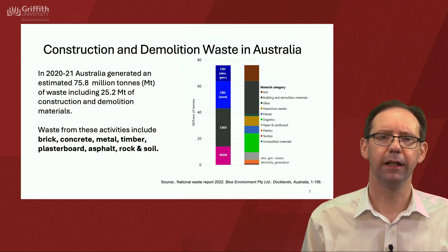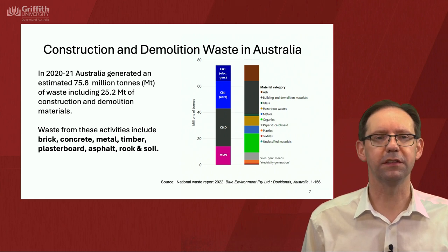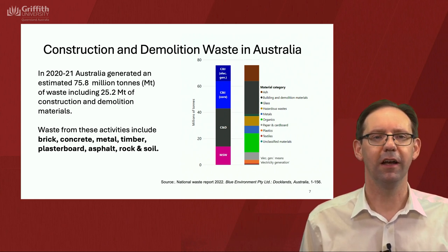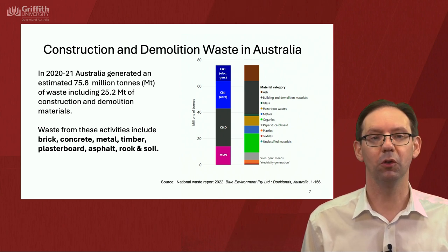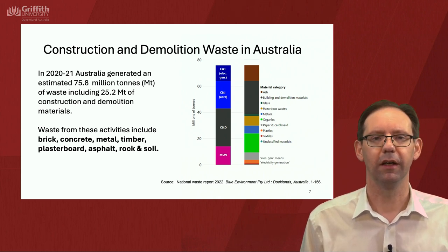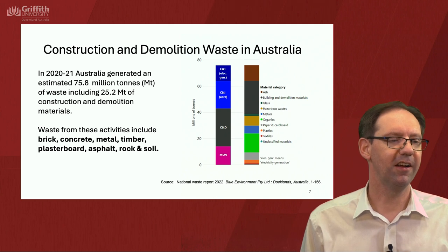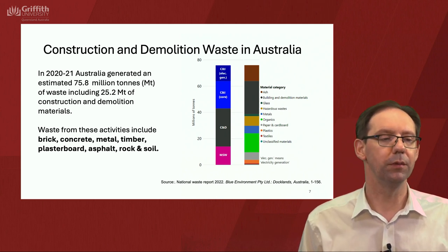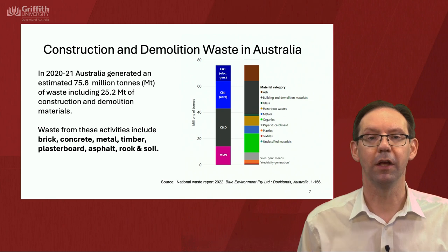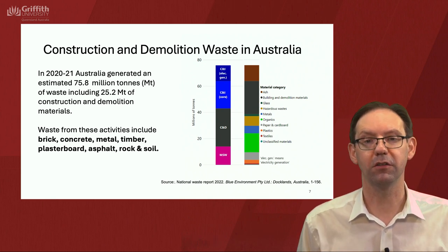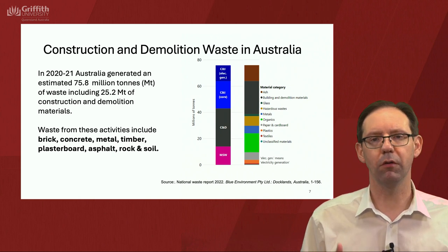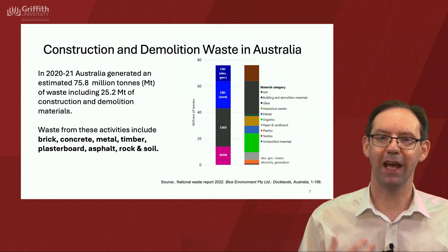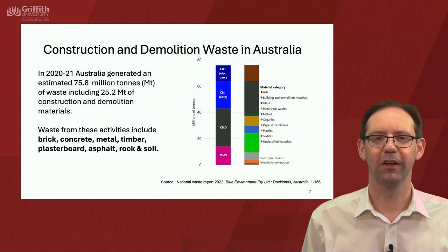Bringing it to Australia: in 2020–21, Australia generated an estimated 75.8 million tonnes of waste. Almost exactly a third of that is from construction and demolition materials. The remainder being commercial and industrial (C&I) or municipal solid waste (MSW), as you can see from the bar chart on the left. C&D waste shown in black in the middle. A similar graph for that 75.8 million tonnes shows how it's split across a range of materials.